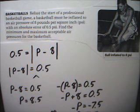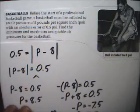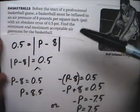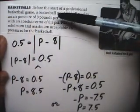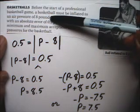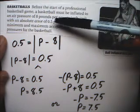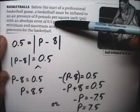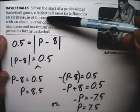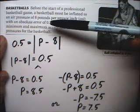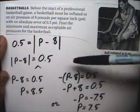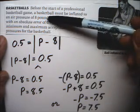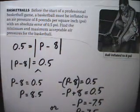And this really should make sense — we probably could have done this right in our head from the beginning. If it's 8 pounds per square inch with an absolute error of 0.5, that means the 8 pounds could be 0.5 less, which gives 7.5, or it could be 0.5 more, which gives 8.5.